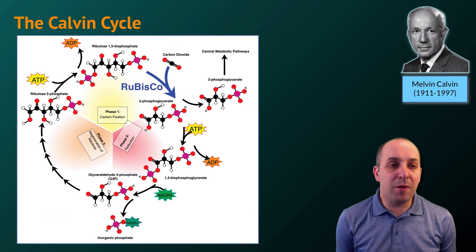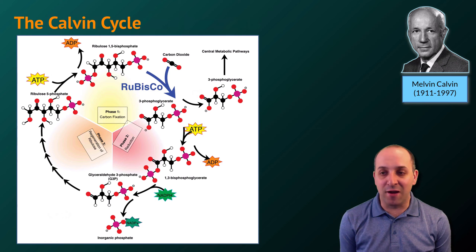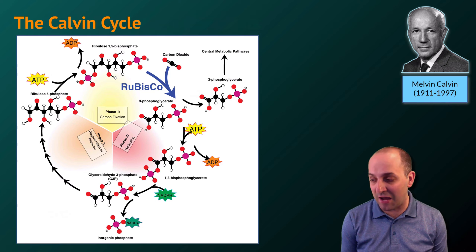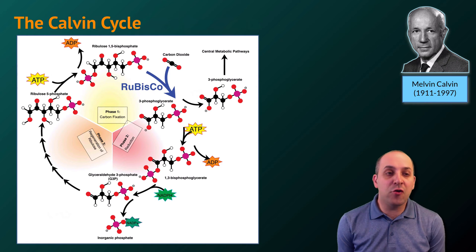The second step in photosynthesis is the Calvin cycle, named after Melvin Calvin, who was the scientist who elucidated the mechanisms that take place inside of the cycle. The Calvin cycle is broken up into three major phases.